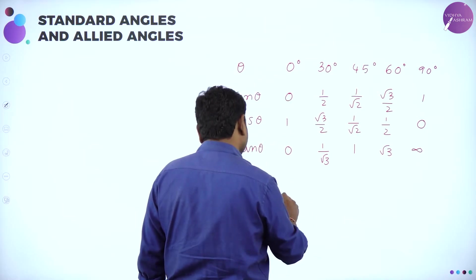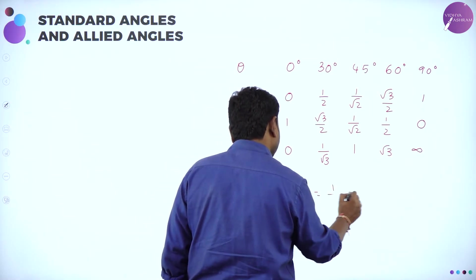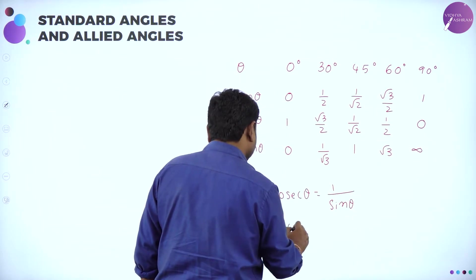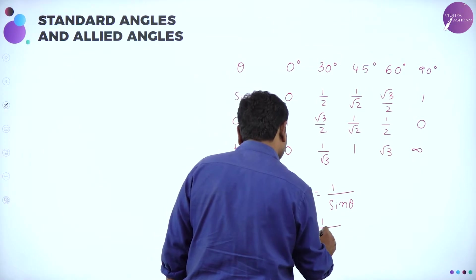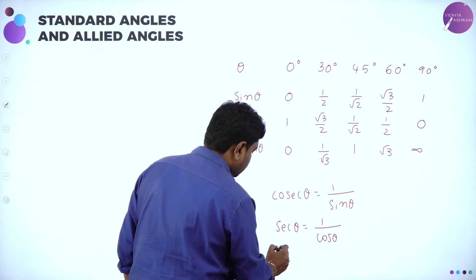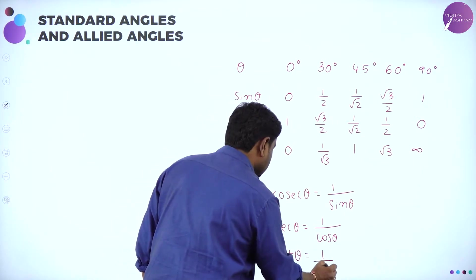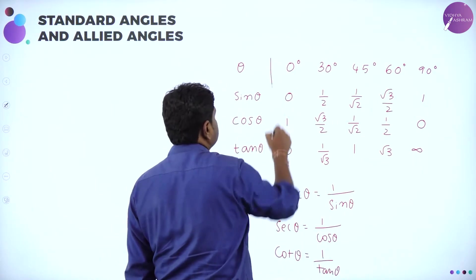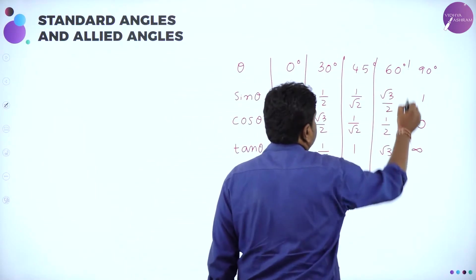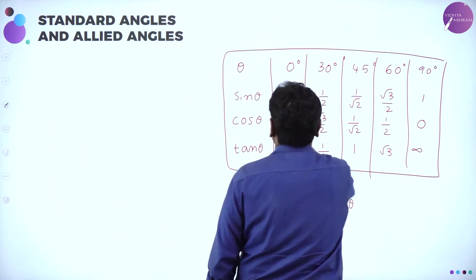Cosecant means reciprocal of sin: cosec θ = 1/sin θ. Similarly, secant θ = 1/cos θ. Reciprocal of cos is secant, and cot means reciprocal of tan. So if you know this angle table and the reciprocal relations, you can find all the values. First become thorough with the standard angles — as I told you in my first session also.